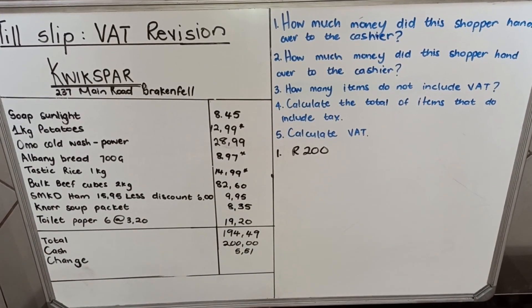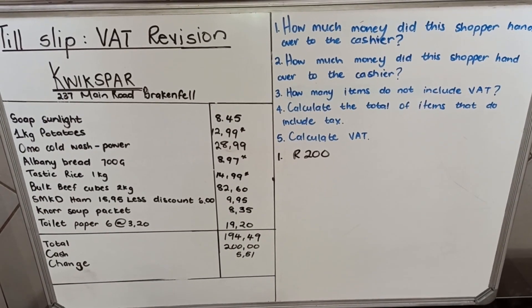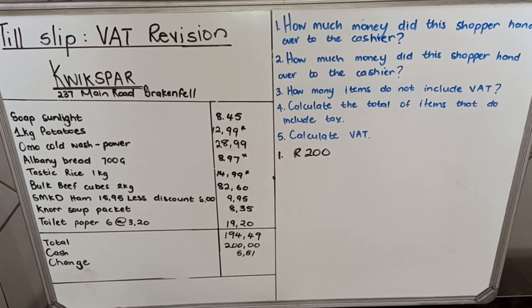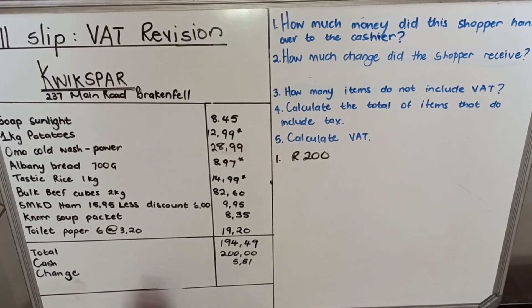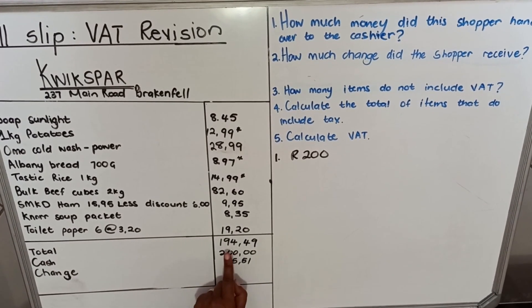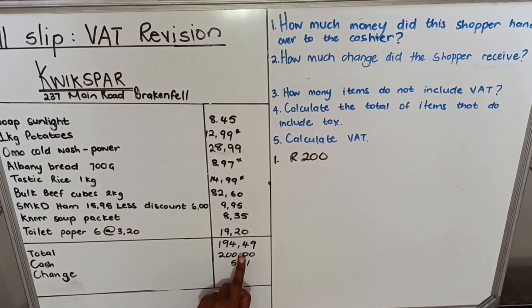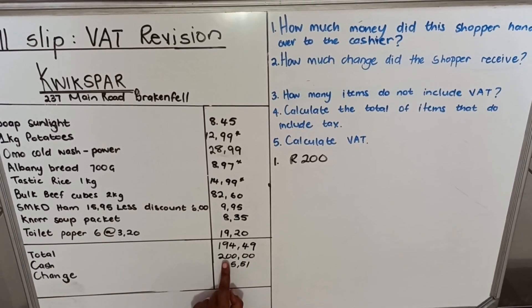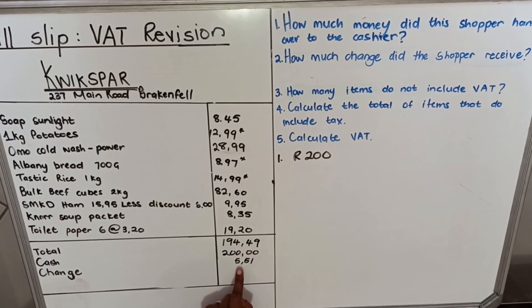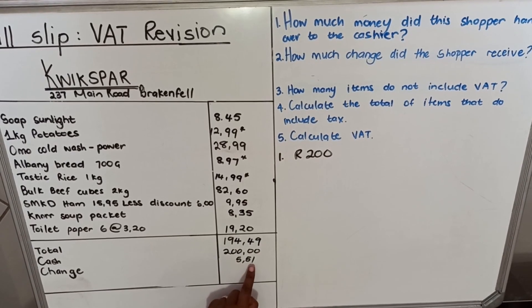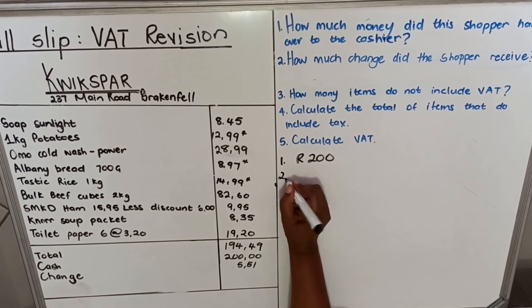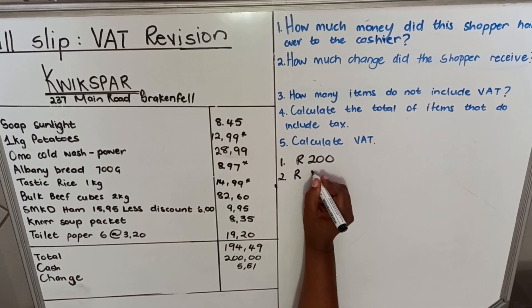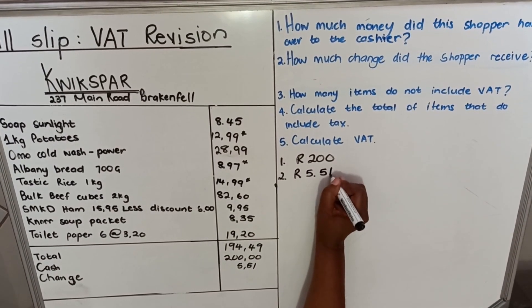The second question asks: how much change did the shopper receive? When you look at the till slip, the total was 194 rand 49 cents, they paid 200 rand, and they got change of 5 rand 51 cents. The answers are in the till slip — you must look at the till slip. So your answer is 5 rand 51 cents.